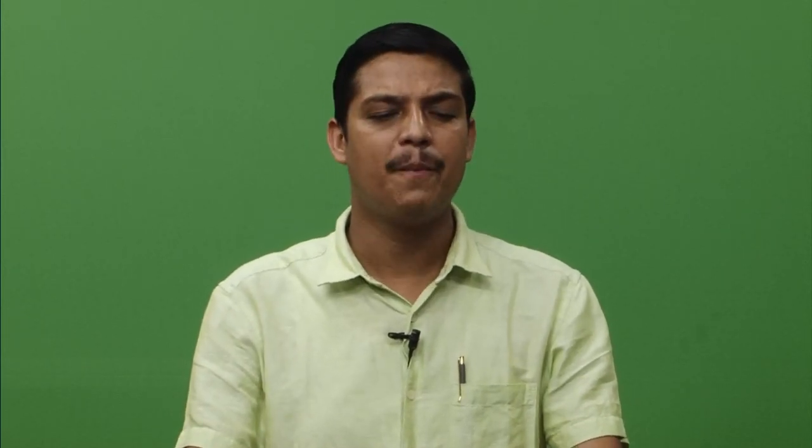Let us see what is the definition of weed. There may be different types of definitions — some people say a weed is a notorious plant, a very bad plant, or a plant causing loss. But a simple definition: a weed is a plant considered undesirable in a particular situation. Any plant that is out of place and out of time. Suppose we are growing maize — maize is a crop — but if a maize plant comes in a rice field or a vegetable field, that maize can be called a weed. There may be lots of Amaranthus, there may be Chenopodium album — people use Chenopodium album as a leafy vegetable — but when they come in very high quantity in a wheat field or a pea field, they are causing nuisance and economic damage to the crop. So they are called weeds — out of place and out of time — considered undesirable in a particular situation.